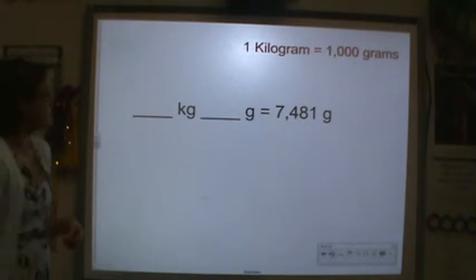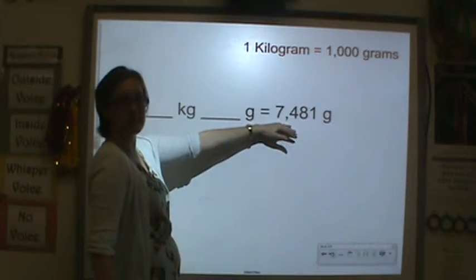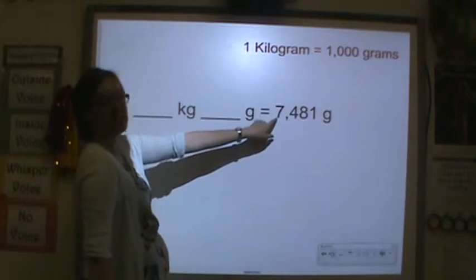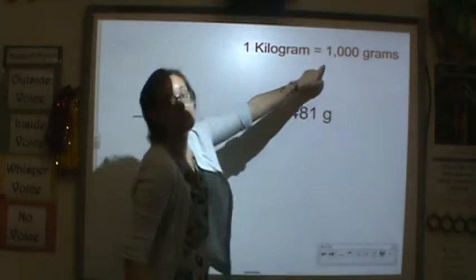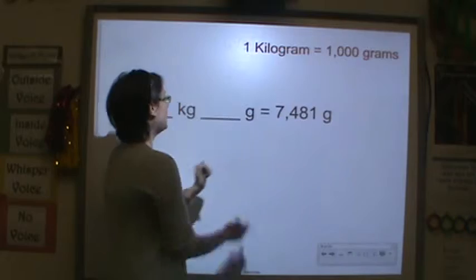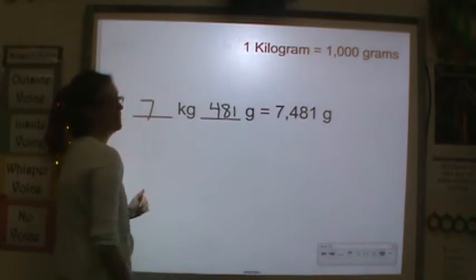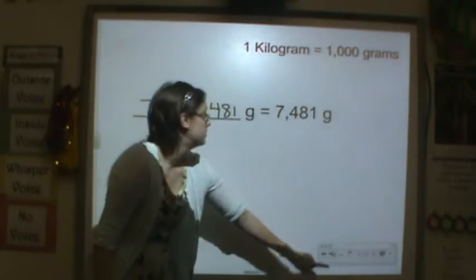Now let's go the other way. So if I were to look at my thousands and then my grams, how many thousands do I have? I have 7 thousands, right, because it's equal to 1,000. And then I have 481 grams.